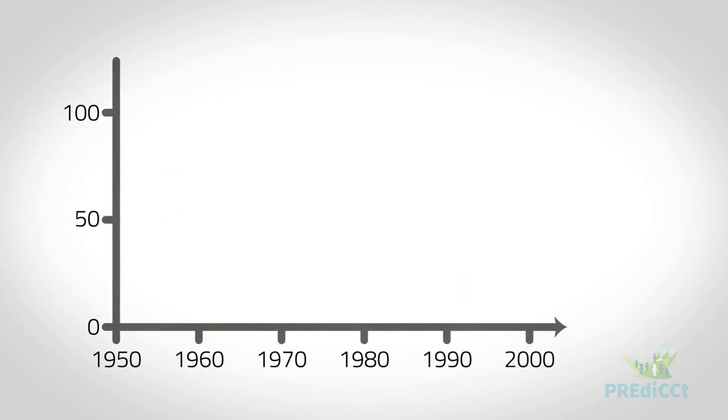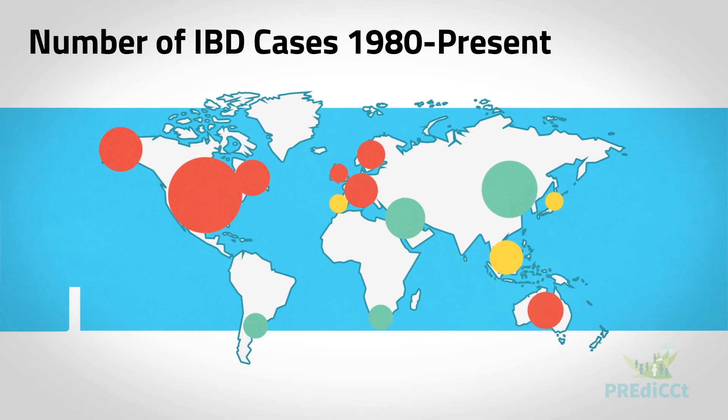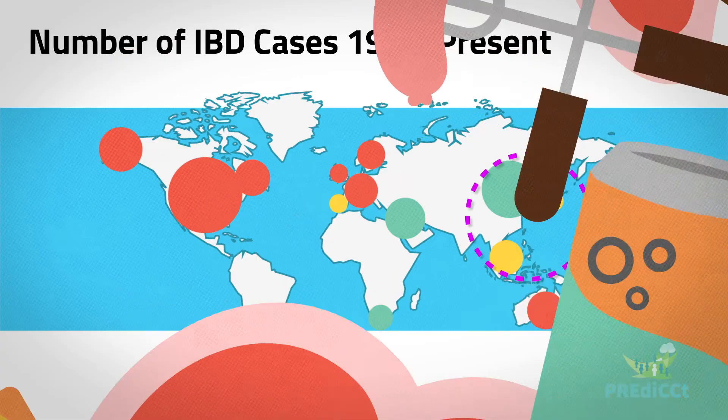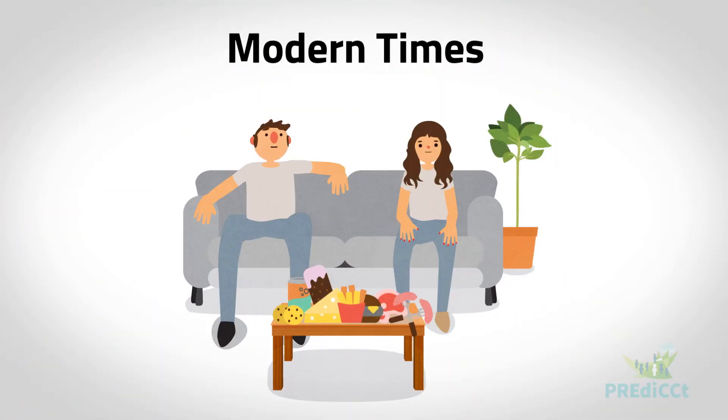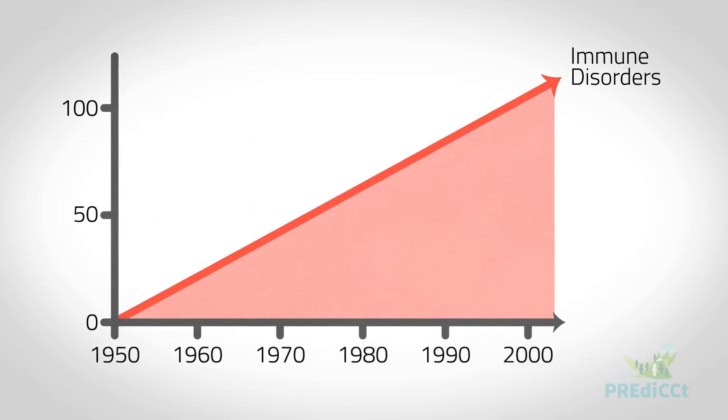Over the past few decades, the dramatic increase in IBD and many other immune-mediated diseases has paralleled the decline in infectious diseases. This is true around the world, and in recent years especially evident in the Far East, where traditional developing countries have modernized, largely adopting a westernized lifestyle. It appears this may be directly responsible for the dramatic increase in the number of IBD cases.